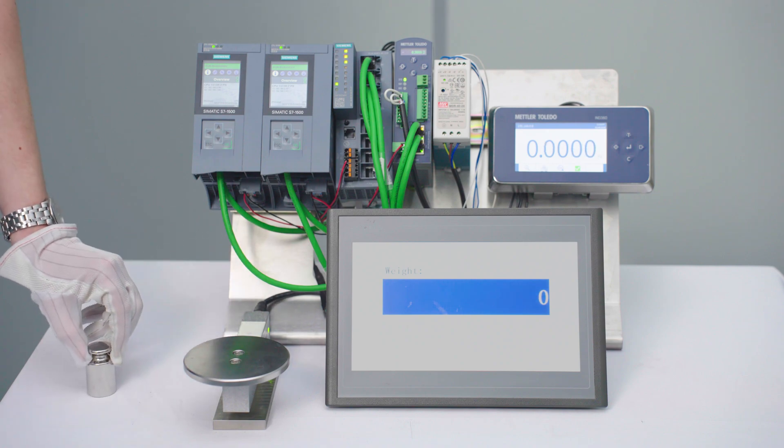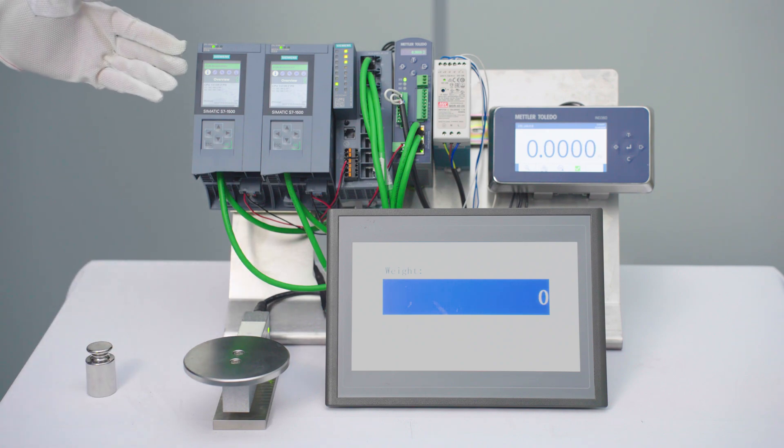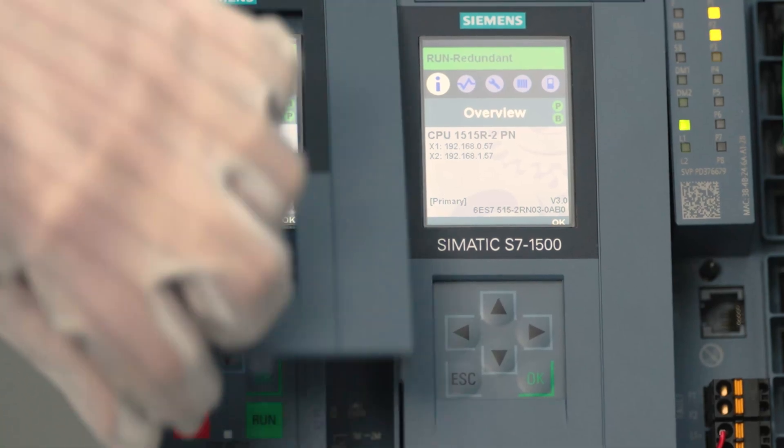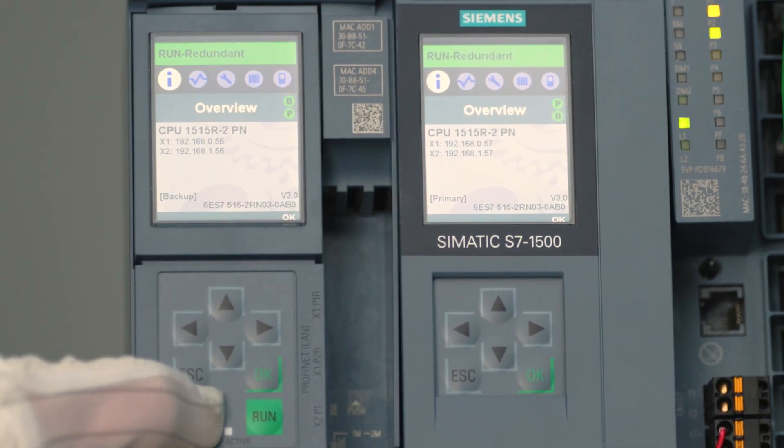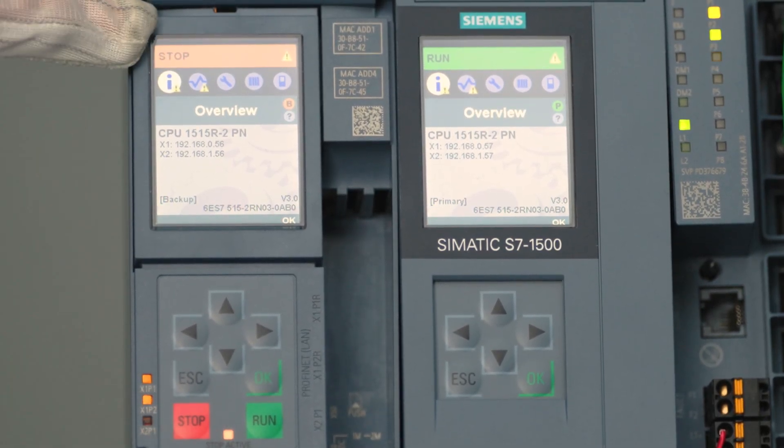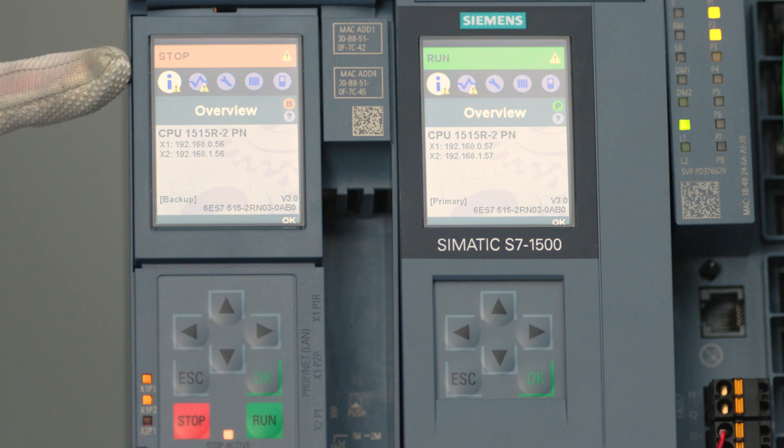Now we simulate the failure of the primary PLC which is this one by putting it into stop mode. We see this PLC is now in stop mode and the backup PLC is taking over.